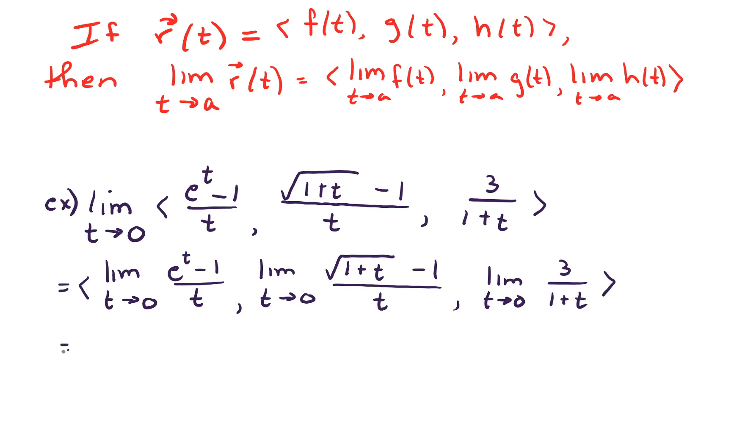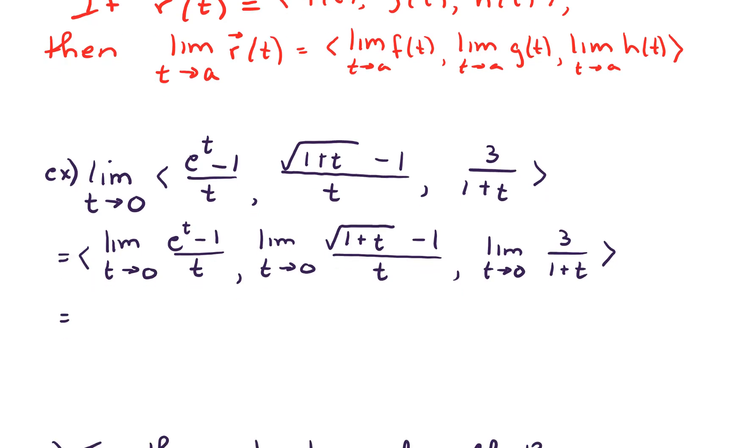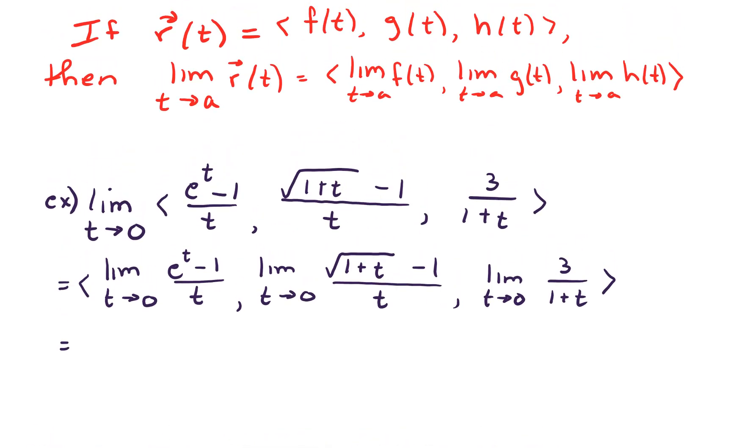We'll try our easiest method first. Can we just let t go to 0? If we put in 0, we get e to the 0 minus 1 over 0, which gives us 0 over 0. This is what's known as an indeterminate form, and it's going to require me to use L'Hopital's Rule.